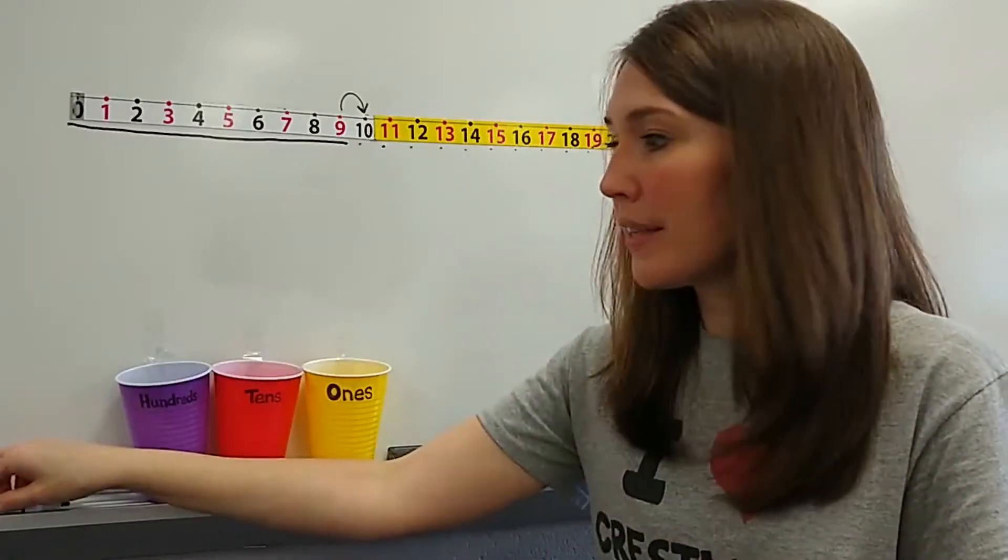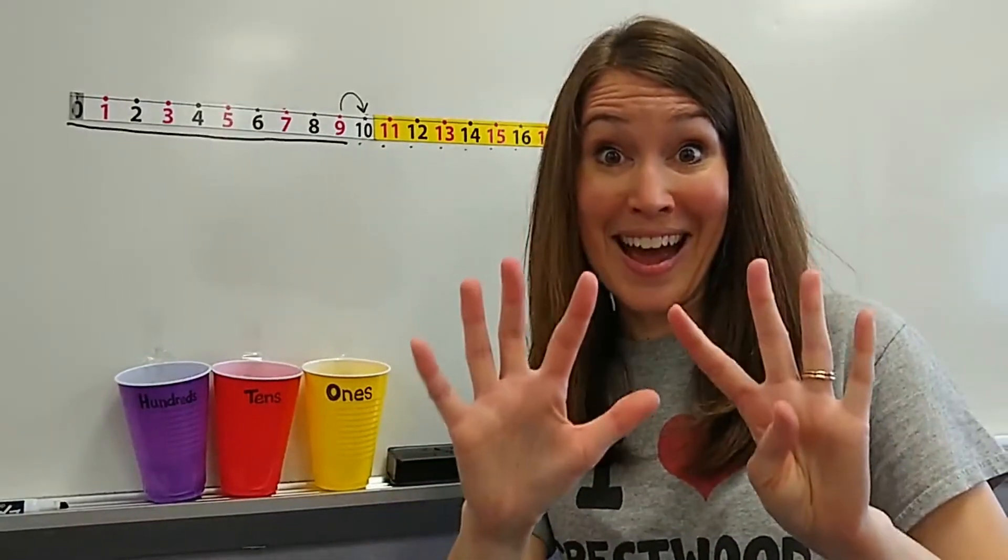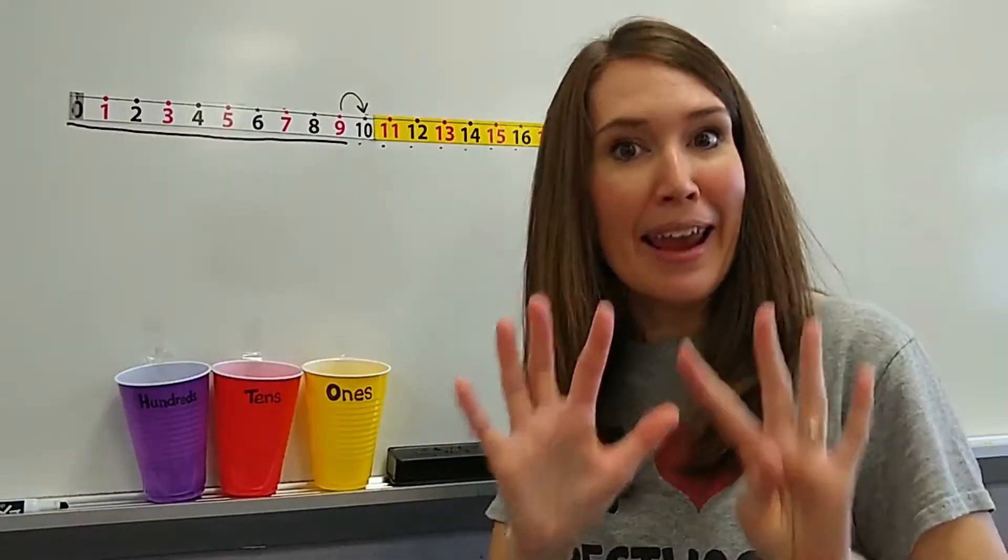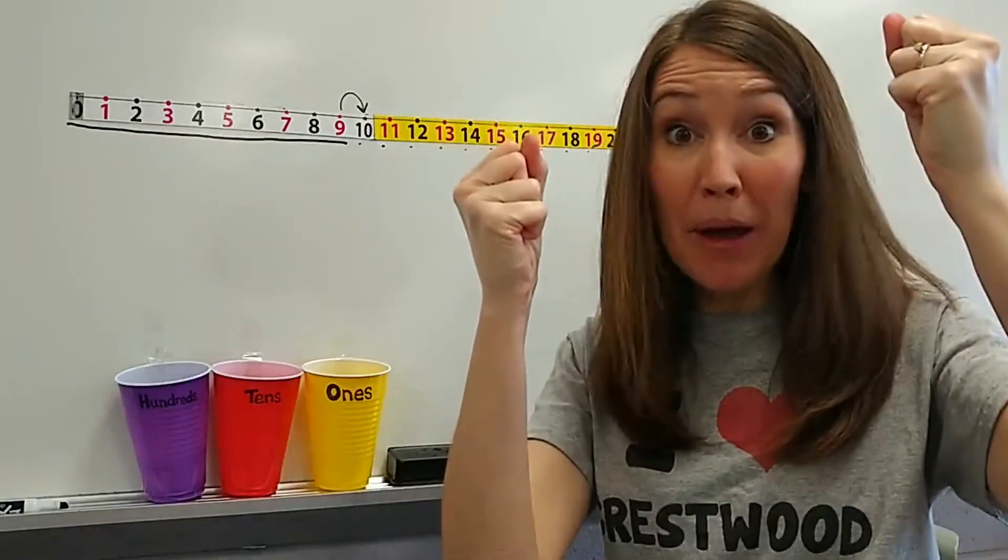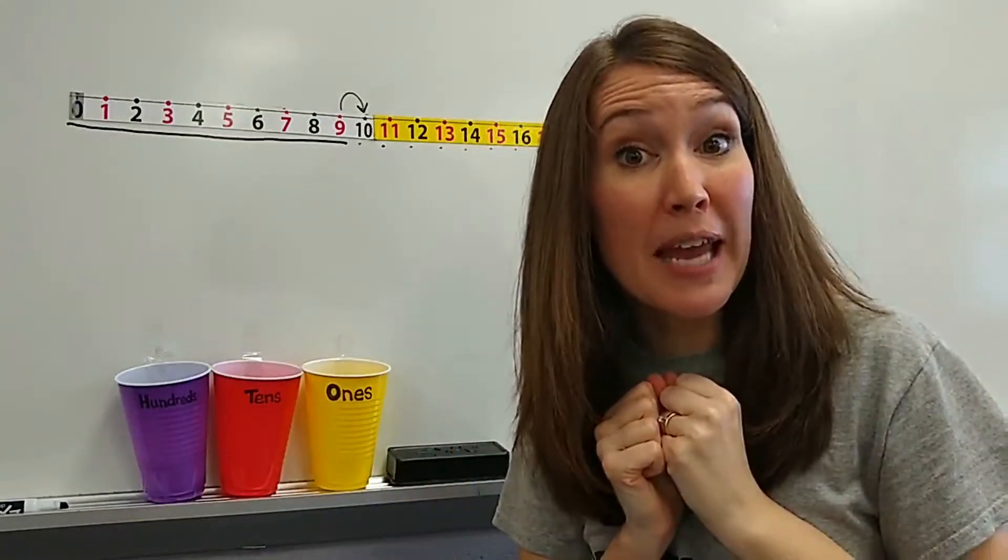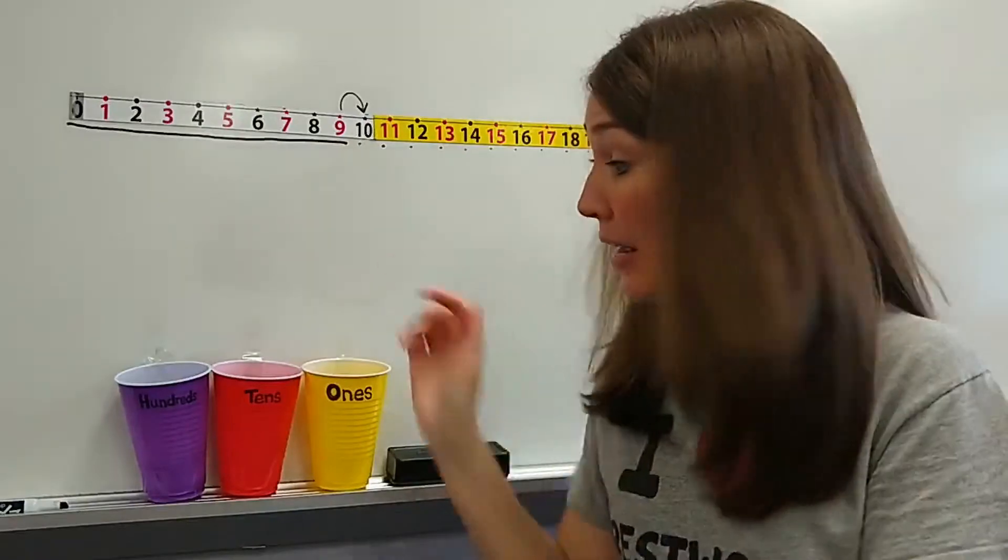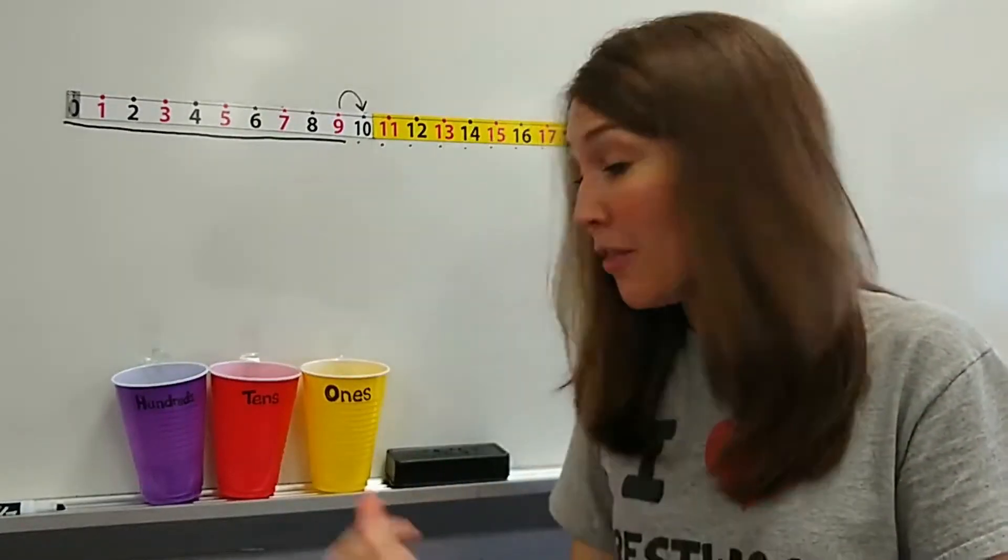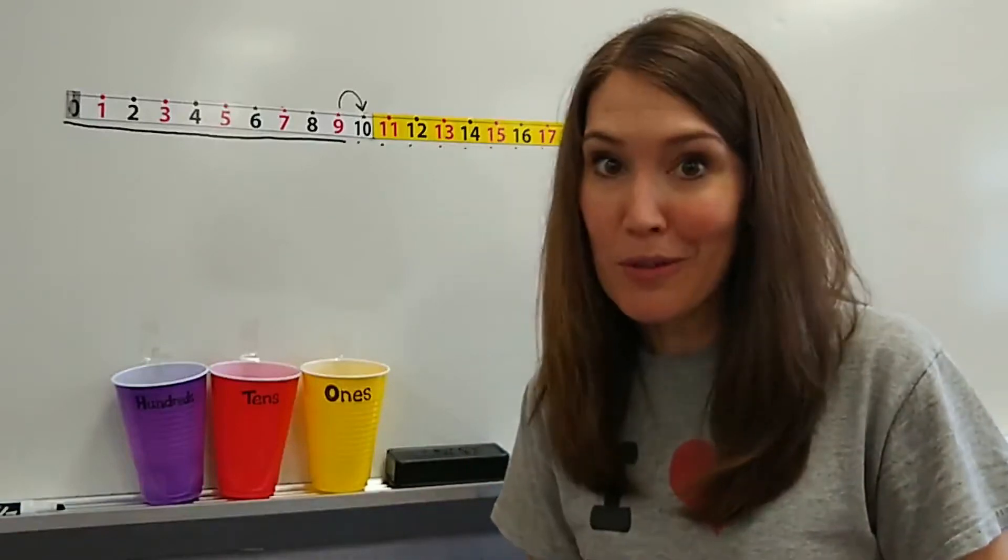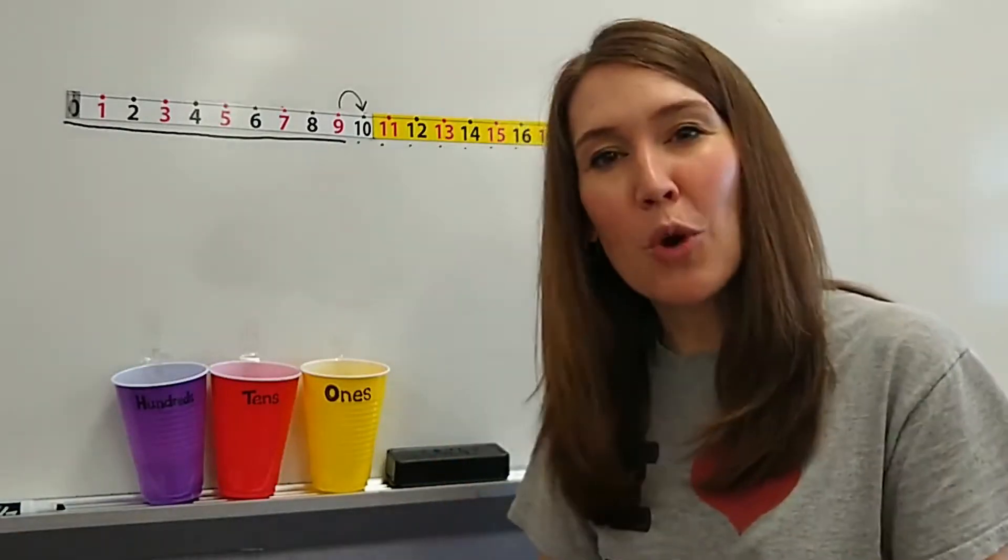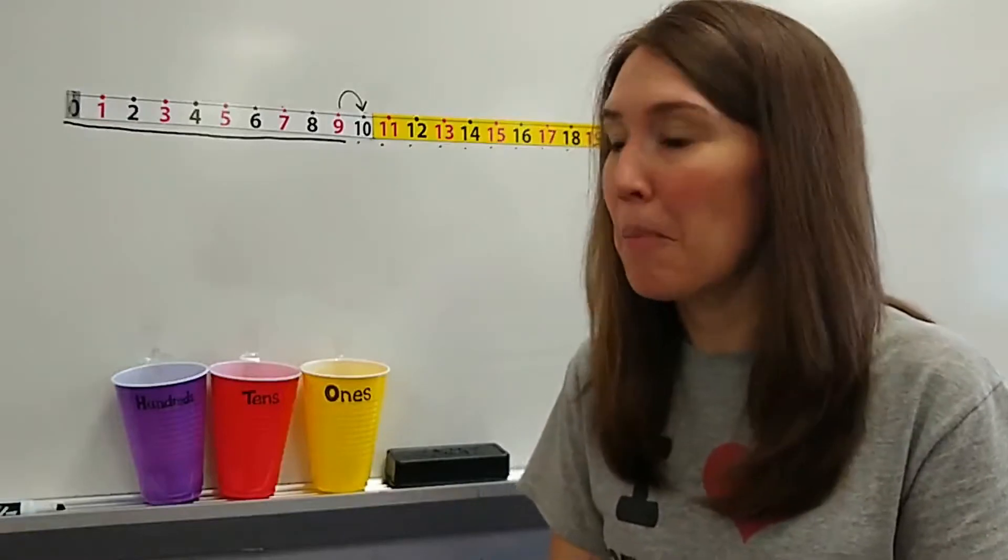But the ones cup can only hold nine straws. After nine straws, when you put one more in, they all pop out because it becomes a group of ten. We bundle it together, and it will move to the tens cup. The ones cup only holds nine straws. After that, it becomes a group of ten, and we're going to record that to see what that looks like for our number.